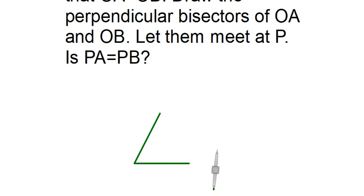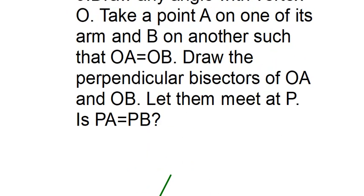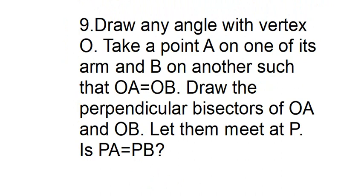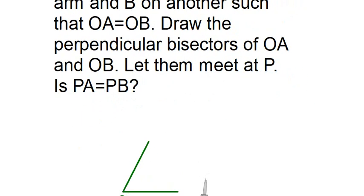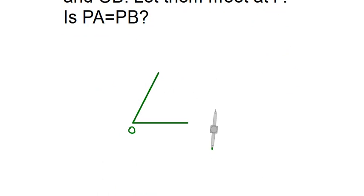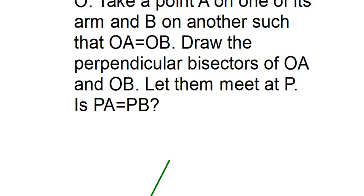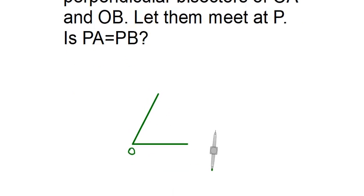Now you can see that the center point of my angle will be called O. We have to take a point A on one of its arms and a point B on the other arm, such that OA is equal to OB.